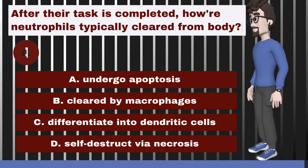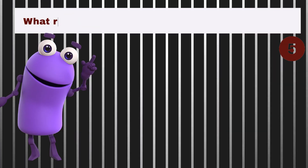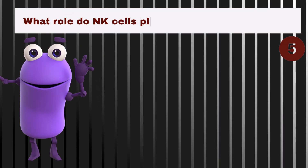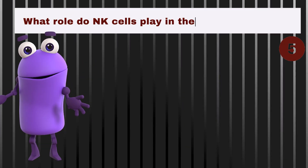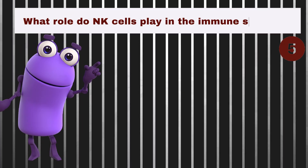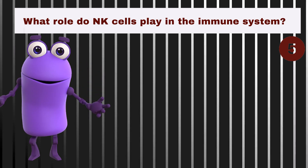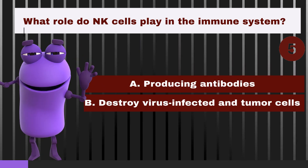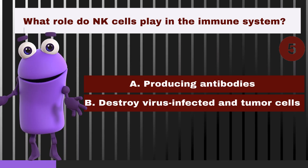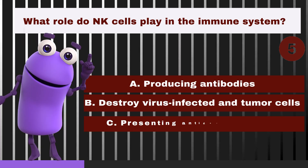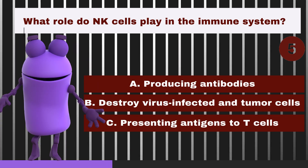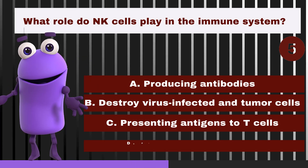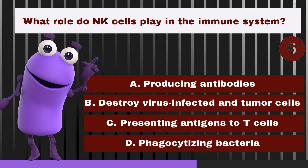What role do natural killer NK cells play in the immune system? A. Producing antibodies. B. Destroying virus-infected and tumor cells. C. Presenting antigens to T cells. D. Phagocytizing bacteria.